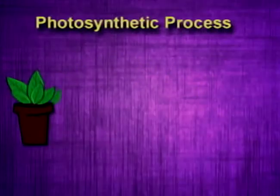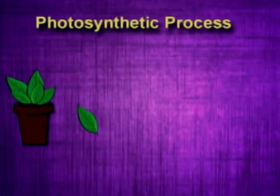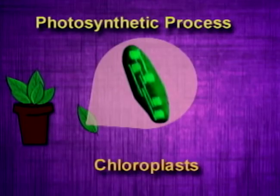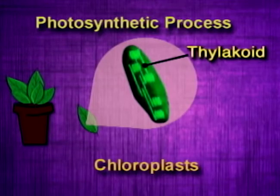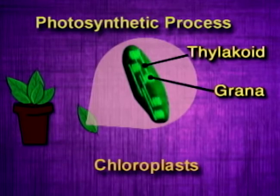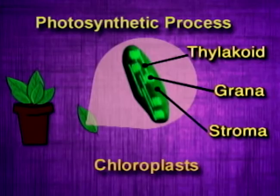It takes place in the leaf, within the cell, in organelles called chloroplasts. Inside the chloroplasts, the photosynthetic pigments are arranged in sacs called thylakoids. The thylakoids are arranged in groups called grana, and the space between the grana is called the stroma.